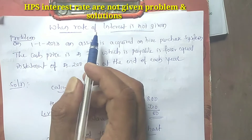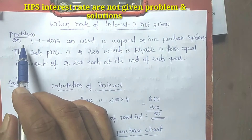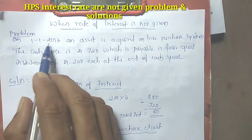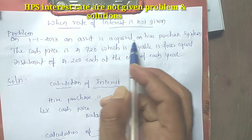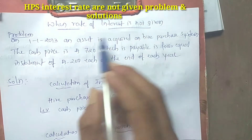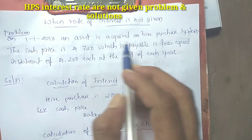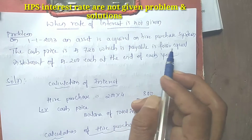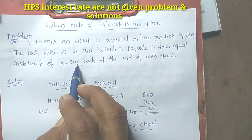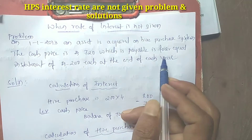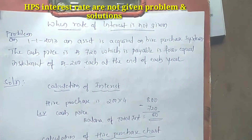Hi students. When a rate of interest is not given — problem: on 1-1-2013 an asset is acquired on hire purchase system. The cash price is rupees 720, which is payable in four equal installments of rupees 200 at the end of each year. The interest rate is not given in the problem, so we have to calculate the interest rate.